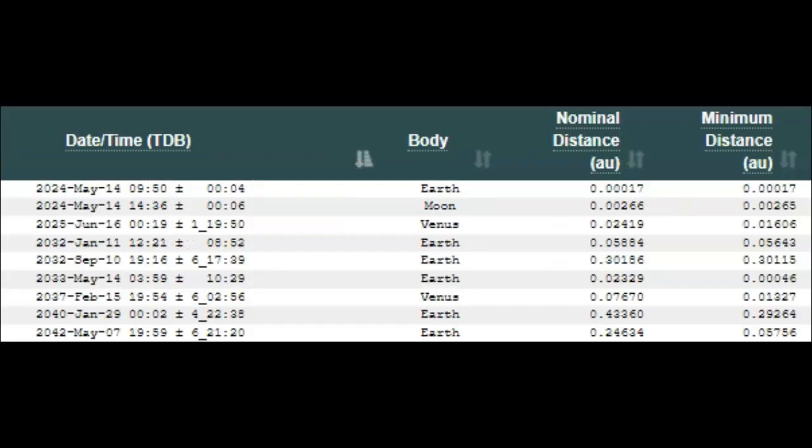All right, taking a look at the close approach data here. We're looking at a close approach of Earth, May 14th at 9:50 UTC time. So, around 2:50 tonight, or tomorrow, if you will, proper central time here in the U.S. And that's plus or minus four seconds. So, they think they have it down. Although the condition code is seven, they extrapolated pages and pages of data from 27 observations, which I've never seen occur.